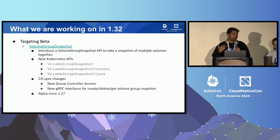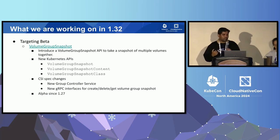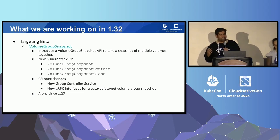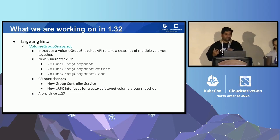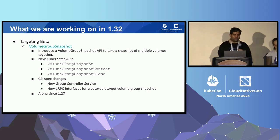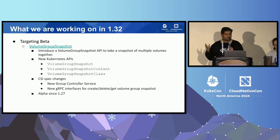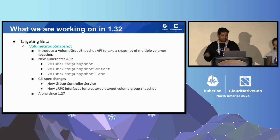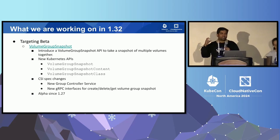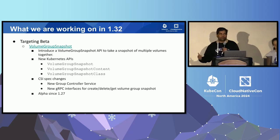Another feature we have been working on in 1.32 is moving volume group snapshot to beta. This is mostly an out-of-tree feature that introduces three new API types: volume group snapshot, volume group snapshot content, and volume snapshot class. It allows you to specify a selector and take a snapshot of all the volumes that match the selector together, and know when they're ready to use.